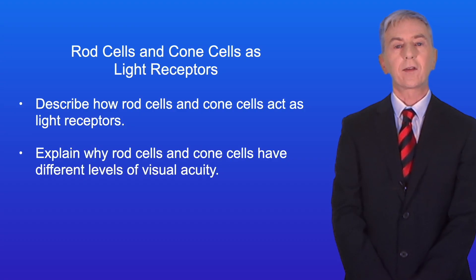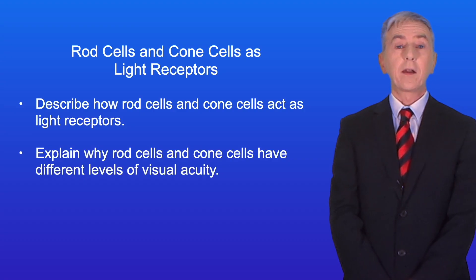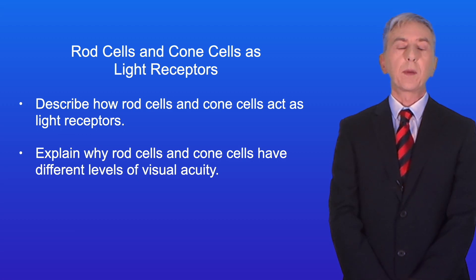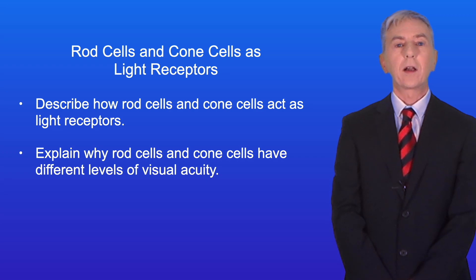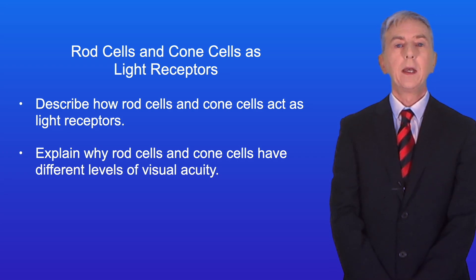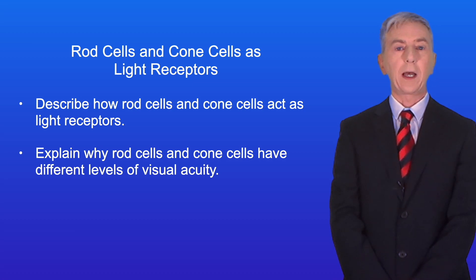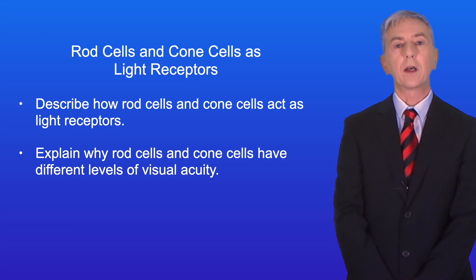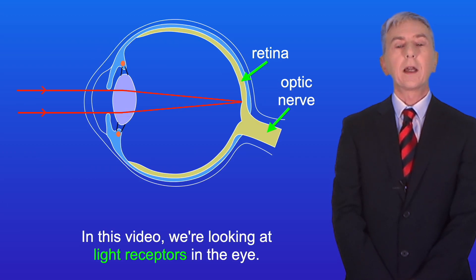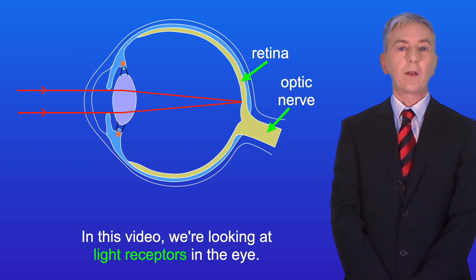Hi and welcome back to Free Science Lessons. By the end of this video you should be able to describe how rod cells and cone cells act as light receptors. You should then be able to explain why rod cells and cone cells have different levels of visual acuity. In the last video we saw how the Pacinian corpuscle acts as a receptor for pressure in the skin. In this video we're looking at light receptors in the eye.